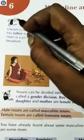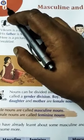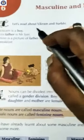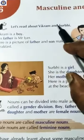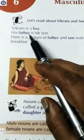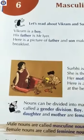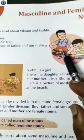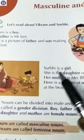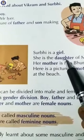Hello children, today we will learn chapter 6 from class 3 English grammar book: masculine and feminine nouns. Let's read about Bikram and Survi. Bikram is a boy. His father is Mr. Iyer. Here is a picture of father and son making breakfast.